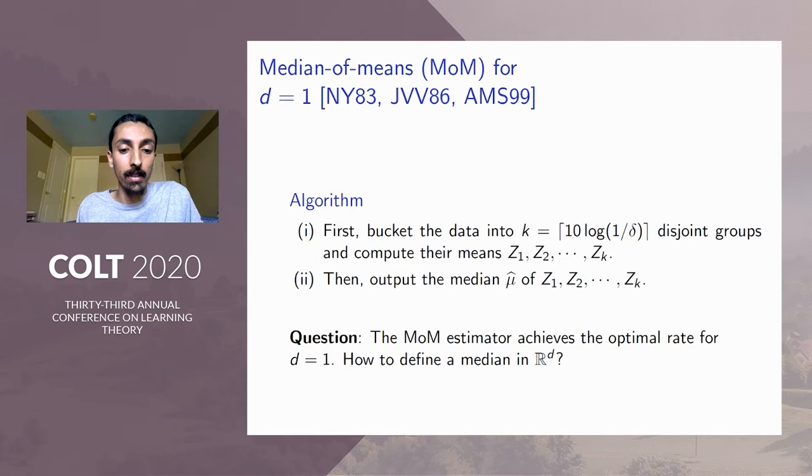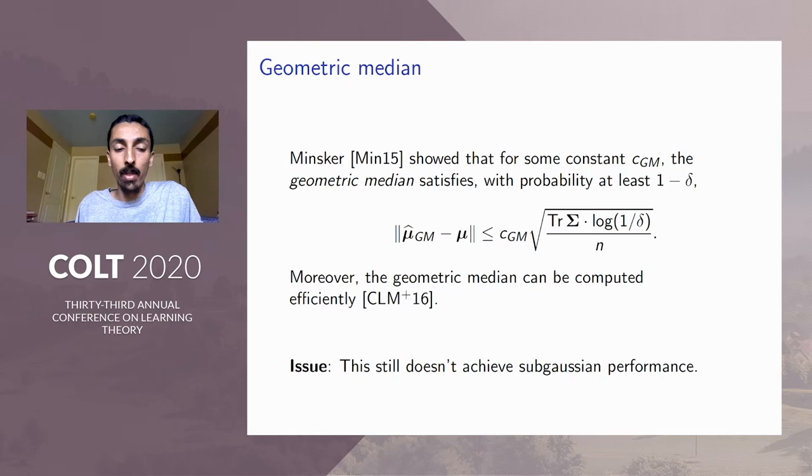So Minsker in 2015 showed that if you choose the geometric median and you plug it into the median of means framework, then the radius improves significantly. In particular, Minsker achieves the correct dependence on log(1/δ). So he gets the correct log(1/δ) instead of the previous 1/δ. However, we still have the trace Σ term multiplying the δ term. So this is not quite sub-Gaussian performance. So as an aside, one favorable property of this estimator is that geometric median can actually be computed very quickly.